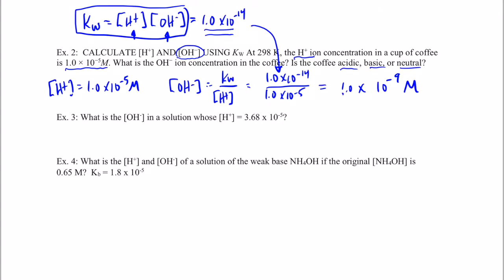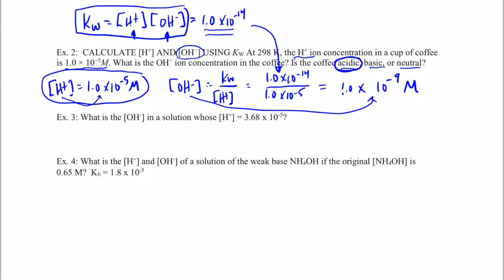Now we have to decide whether that solution is acidic, basic, or neutral. We have to find out which concentration is bigger. The hydroxide concentration is 1 times 10 to the negative 9th, and the hydrogen ion concentration is 1 times 10 to the negative 5th. The hydrogen ion concentration is bigger, so this solution is acidic. In fact, the hydrogen ion concentration is four powers of 10 bigger — 10 to the negative 5th compared to 10 to the negative 9th, which is 10,000 times greater.